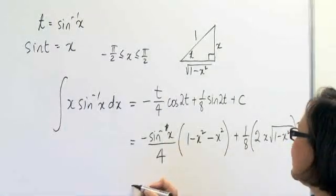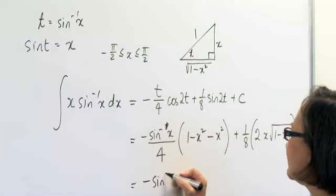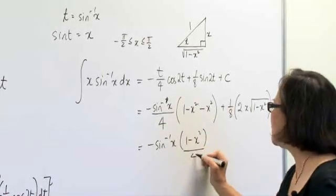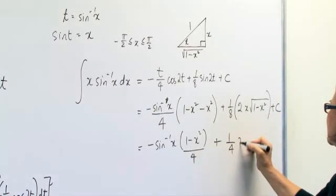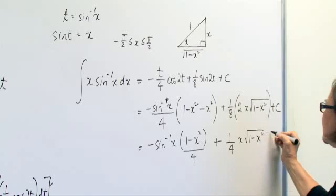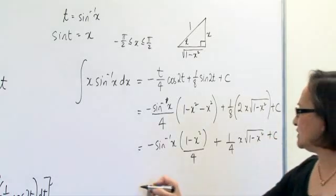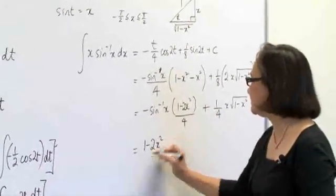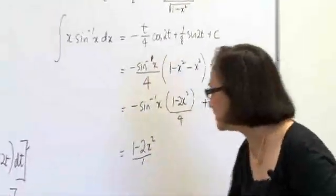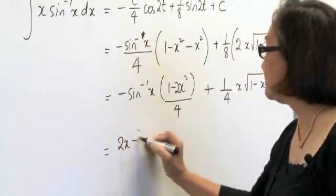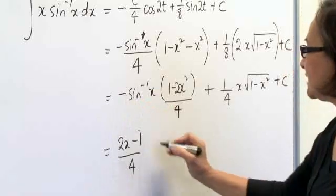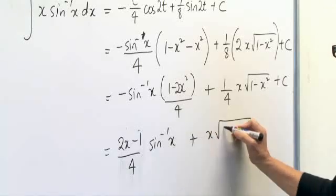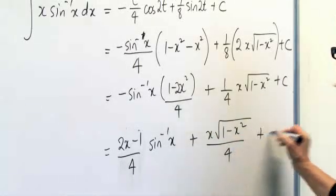And this now gives me minus sine to the minus 1 of x into 1 minus x squared over 4 plus a quarter x square root of 1 minus x squared plus c, which is equal to 2x squared minus 1 on 4, because of the negative sign, sine to the minus 1 of x plus x square root of 1 minus x squared on 4 plus c.